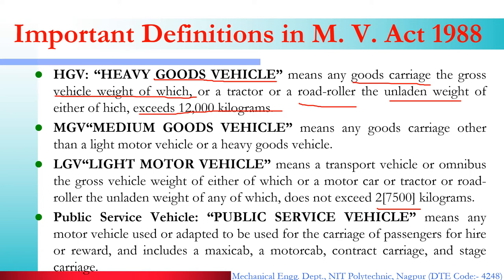Public Service Vehicle: any motor vehicle used or adopted to be used for the carriage of passengers for hire or reward. This includes trucks, cars, buses — vehicles used to transfer passengers. Under this, maxi cab, motor cab, contract carriage and stage carriage are included. Stage carriage means ST buses where you can take a ticket for a particular stage. Contract carriage means you have taken a vehicle on contract to go somewhere and come back. Any car can be called a motor cab or maxi cab and used as a public service vehicle.